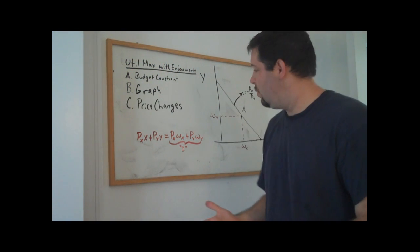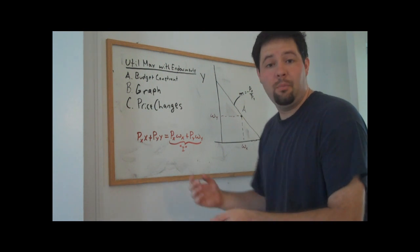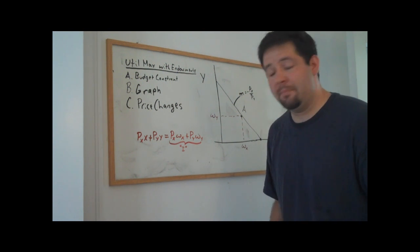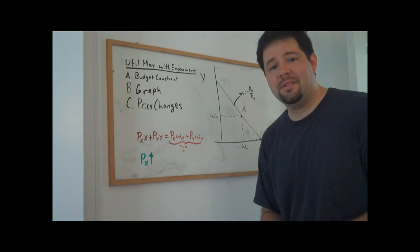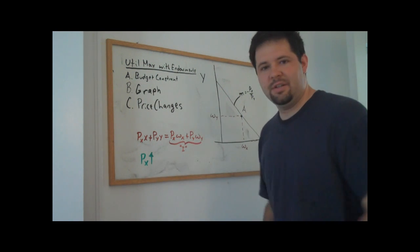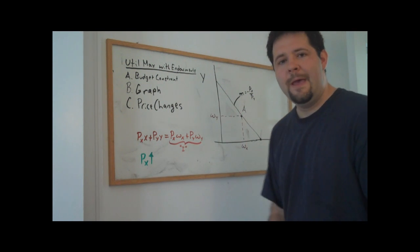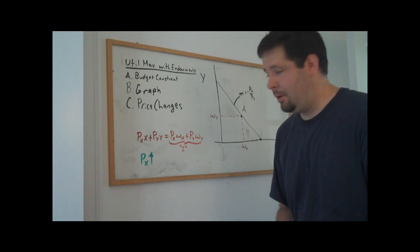Okay, so now let's consider what happens to the endowment budget constraint when we see price changes. For example, let's suppose the price of X increases. Now if the price of X increases, the magnitude of the slope that we just described here, the magnitude of the slope gets bigger. That means that the budget constraint gets steeper.